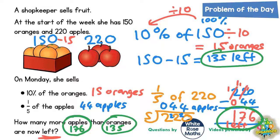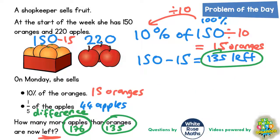We need to find the difference. And to find the difference between any two numbers, you do a subtract. So the final part of this question is to subtract the 135 from the 176.